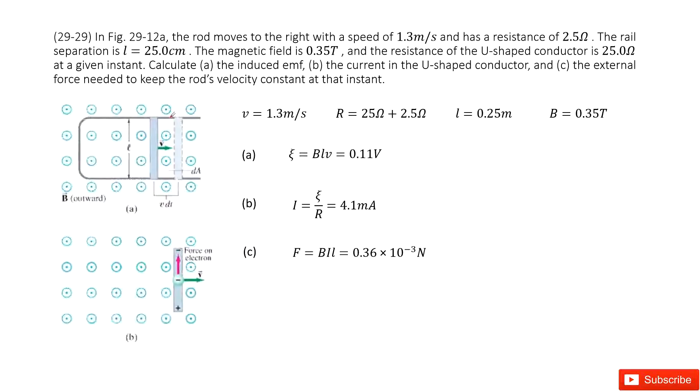We have a moving bar in the magnetic field. The given quantities are the velocity for this moving bar, the length for the moving bar, the magnetic field for the moving bar, and also the resistance for this loop.